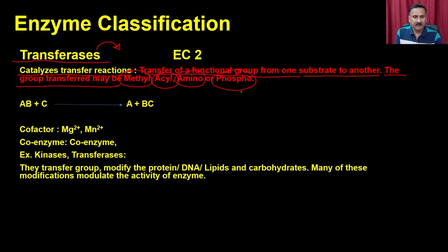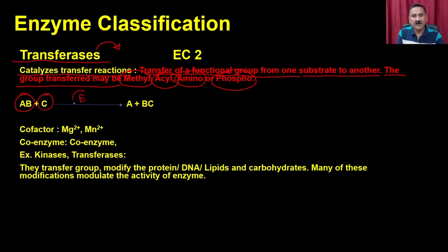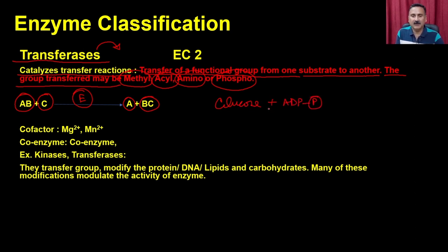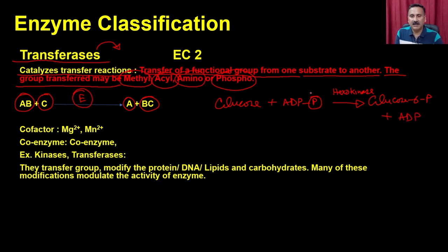There are many more groups transferases can act on — including carboxyl groups and others. For example, if substrate AB reacts with C in the presence of the enzyme, group B is transferred from A onto C to form BC. A classical example is glucose reacting with ATP, catalyzed by hexokinase, to form glucose-6-phosphate and ADP — where the phosphate group is transferred from ATP onto glucose.